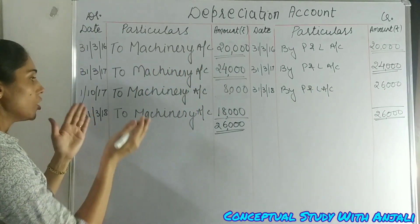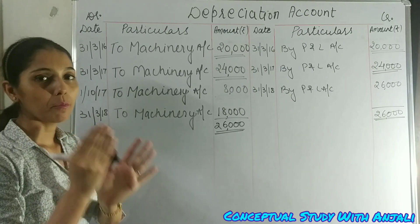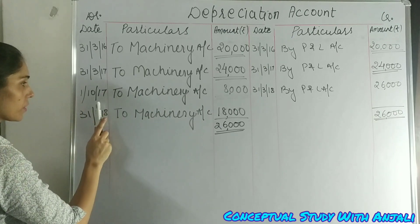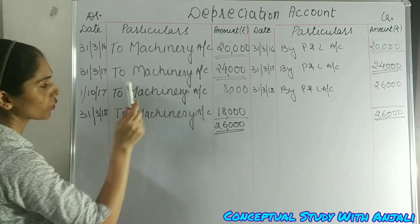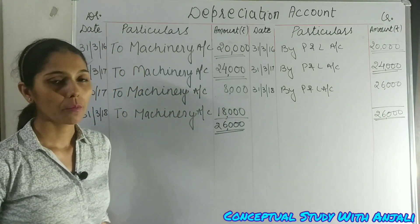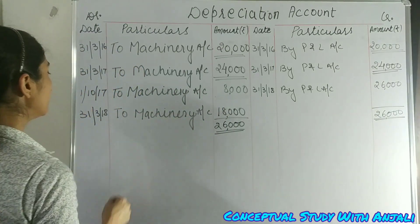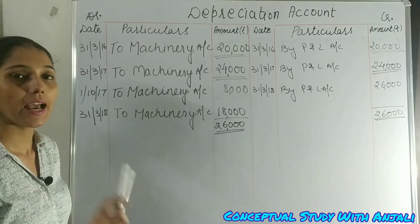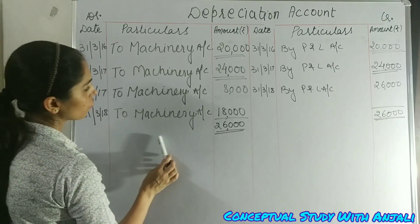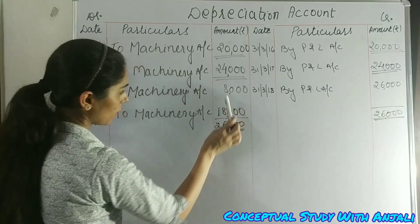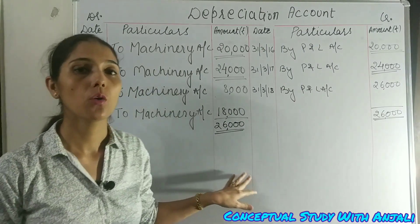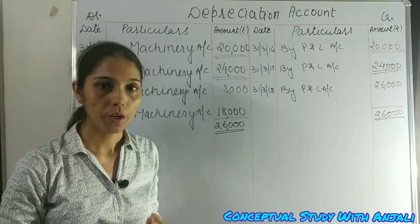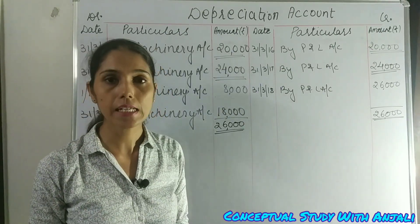In the financial year 2017-18, we have a machinery sale, so we transfer depreciation in parts. On 1st October 2017, debit machinery account Rs. 8,000 for Machine 1. Then on 31st March 2018, debit machinery account Rs. 18,000. Total for the year is Rs. 26,000, transferred by profit and loss account Rs. 26,000.